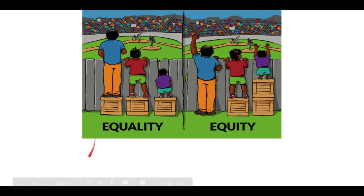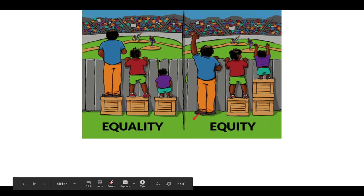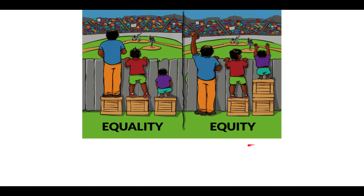Equity is a similar word to equality but it's more about being fair. Equity says that people who need more should get more help. In this case, the shorter person has two boxes so they can also observe the game; this person has one box because they do need some help; and the person who needs no help at all is not receiving any. Equity, particularly within the tax and benefits system, is about not giving everyone exactly the same, but giving more help to those who need it.